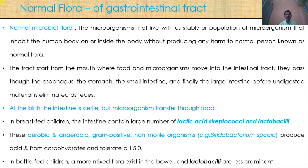The digestive tract starts from the mouth, where food and microorganisms move into the intestinal tract. They pass through the esophagus, the stomach, the small intestine, and finally the large intestine before undigested material is eliminated as faeces. At birth, the intestine is sterile — meaning the digestive tract does not contain any type of microorganism at the time of birth.